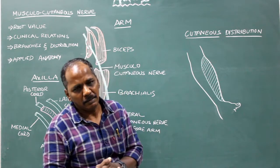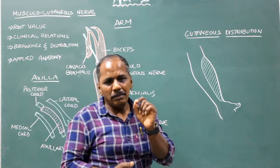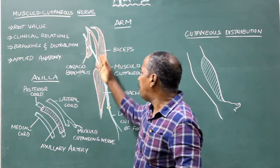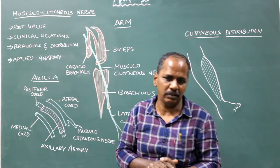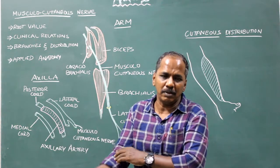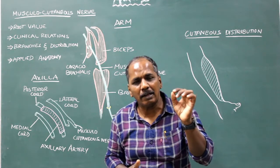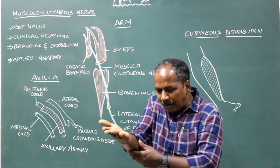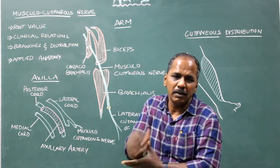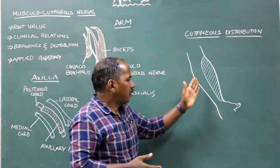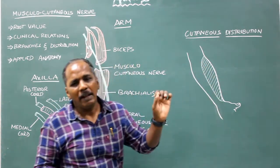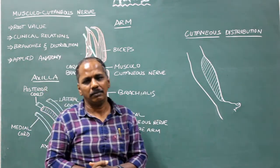Applied anatomy — injury to the musculocutaneous nerve results in paralysis of the biceps and brachialis. Brachialis is a powerful flexor, so there is loss of flexion at the elbow joint. Biceps is a powerful supinator, so supination of the forearm is lost, resulting in pronation of the forearm. There is also loss of sensation over the lateral half of the anterior surface of the forearm.